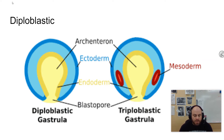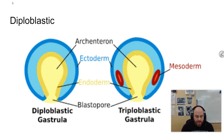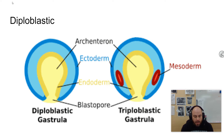They kind of just form over during the process of gastrulation, where they form that kind of squished-in ball like you see there, and that forms those two tissue layers. The endoderm is essentially their digestive system, and the ectoderm is like their nervous system and their outer covering, like a skin sort of thing.